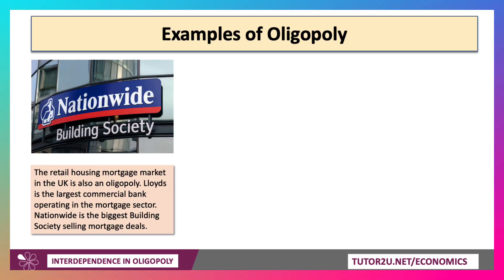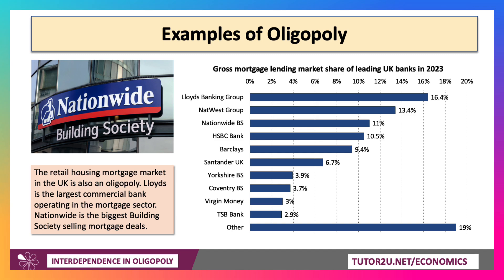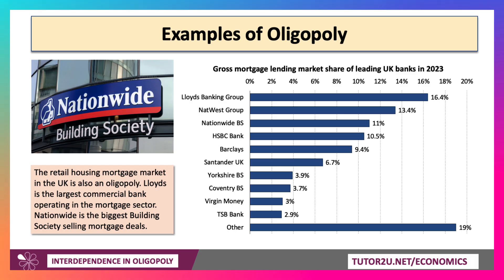Another good example of oligopoly is the mortgage market in the UK — the retail housing mortgage market. Home loans is an oligopoly. Lloyd's is the biggest commercial bank operating in the sector. Nationwide is the biggest building society. And you can see there NatWest, HSBC and Barclays all have 9, 10 or more percent of the market.